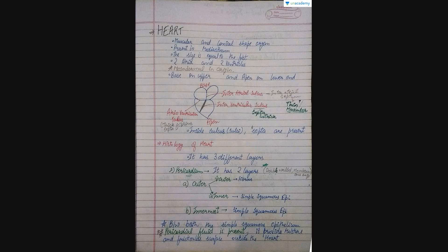The heart is a muscular and conical-shaped organ present in the mediastinum, which is the space between the two lungs. The size of the heart is approximately equal to that of a fist. The heart is mesodermal in origin.